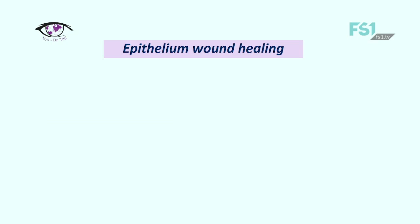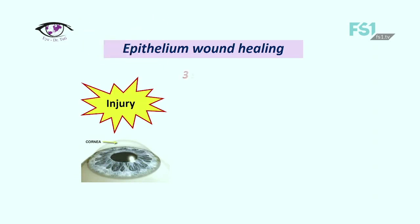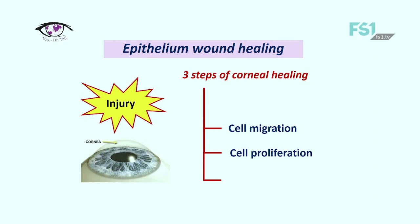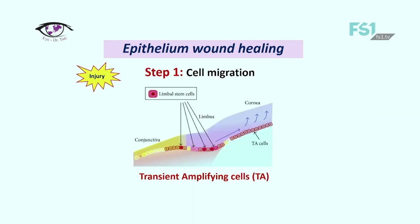Now let's continue with epithelial wound healing. As the cornea gets an injury, there are three main steps of corneal healing: cell migration, cell proliferation, and cell adhesion. But before all three steps, the cornea passes through a biochemical preparation of the whole tissue where the biochemical picture totally changes and prepares the corneal tissue for these three healing steps. This phase is called the latent phase.